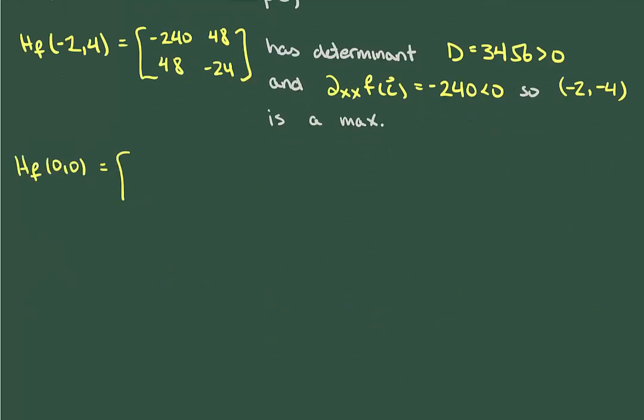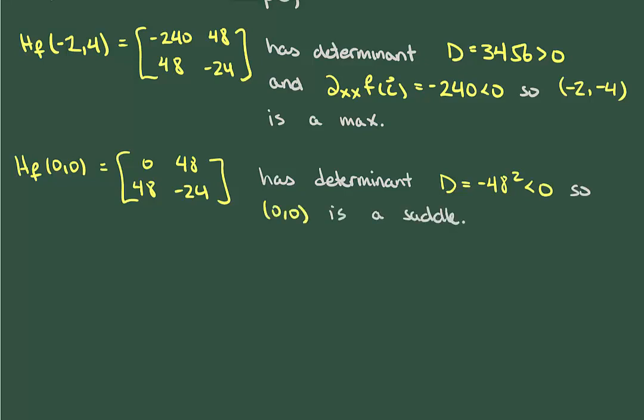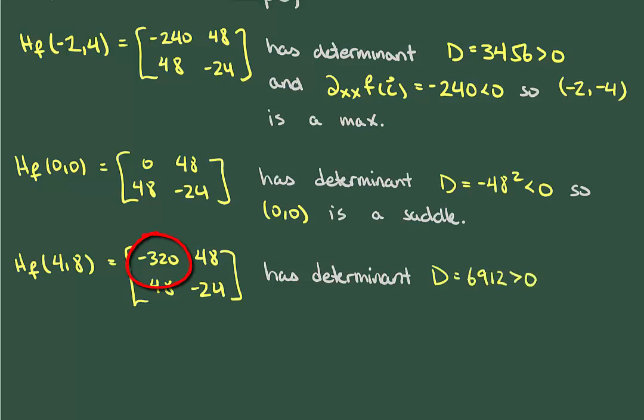We repeat this process for the Hessian at the point (0,0), wherein we get that the determinant here is negative, and hence a saddle point. Finally, the Hessian at (4,8) gives us a positive determinant. So, again, we're going to have to look at the xx derivative. This is negative, telling us that (4,8) is a local maximum. The second derivative test is thus the only test that we have for classifying local maxima and minima, so be sure to familiarize yourself with it.